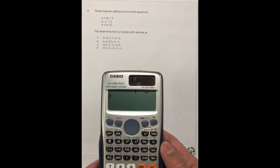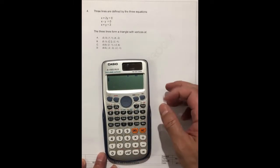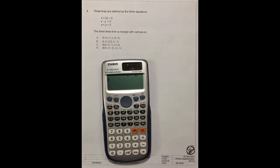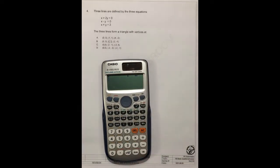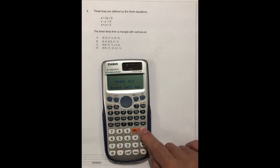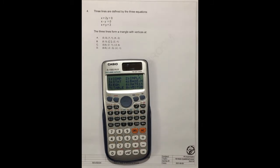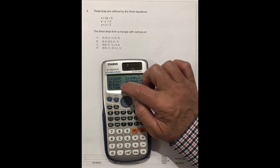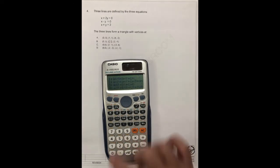For solving this question, we have to choose the mode. First, you should initialize the calculator. Shift, shift line is clear, number 3 equals yes. First of all, you choose the mode. Here, they have the equation, number 5. We can choose number 5.